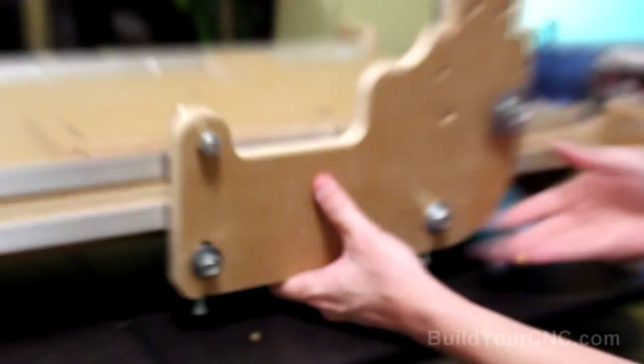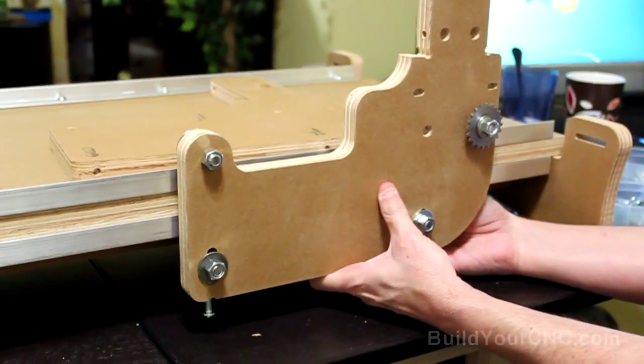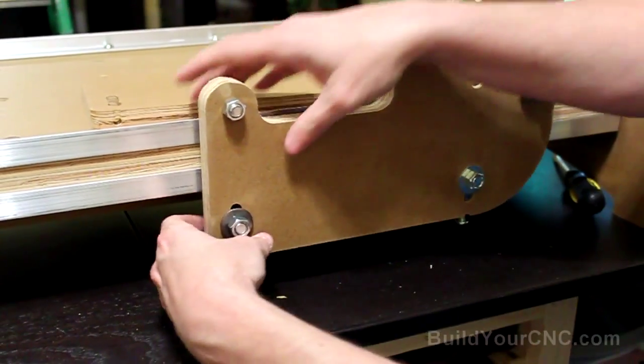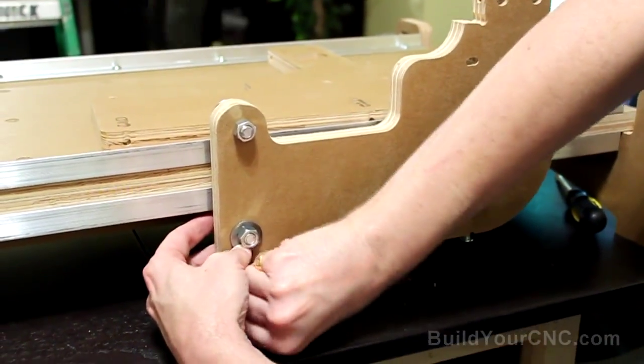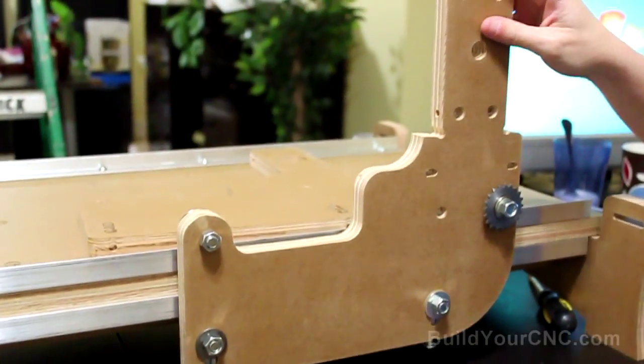Okay, now let's try to get this on the rails and we can move it up with our fingers at first, get it into the rail, and then finger tighten it so it stays on the rail. And now we have the gantry side on the rail.